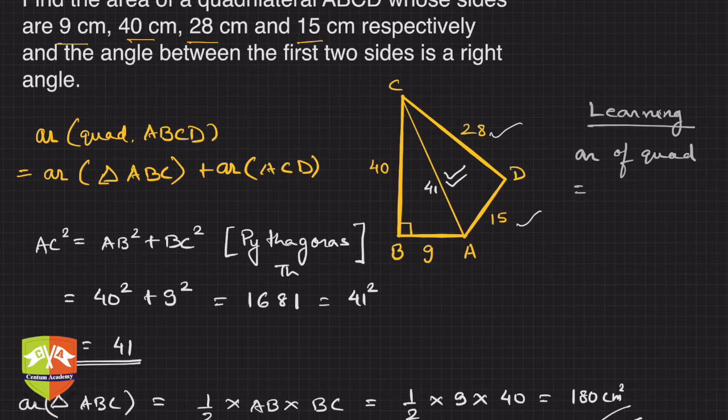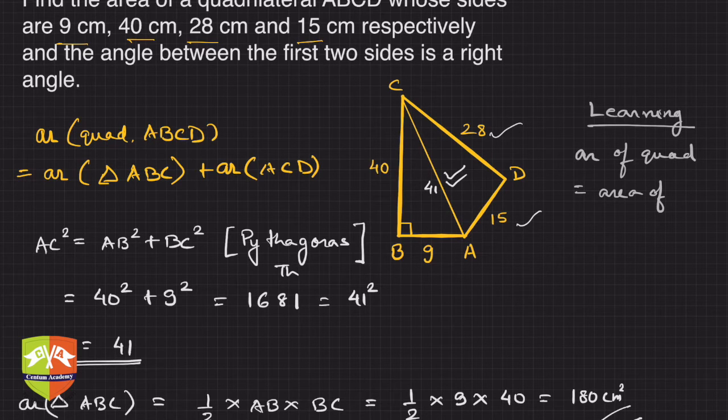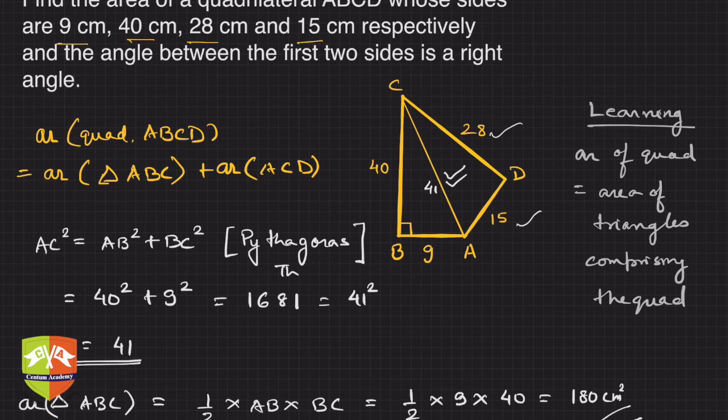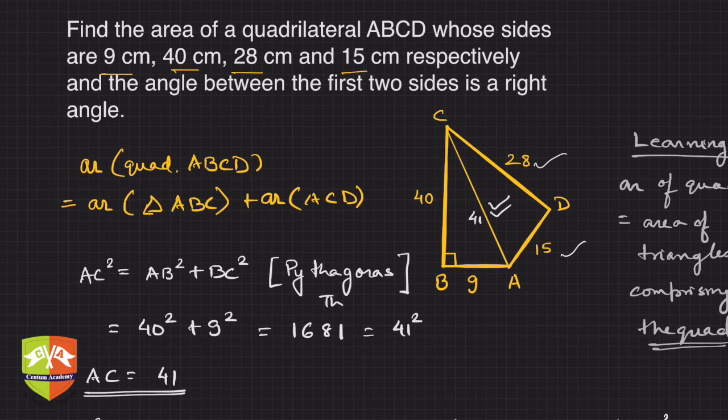Find the area of the triangles comprising the quadrilateral. And then obviously we know the formula for finding the area of a triangle, whether through half times base times height or through Heron's formula. That's all about this question.